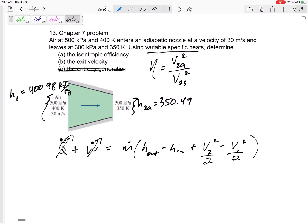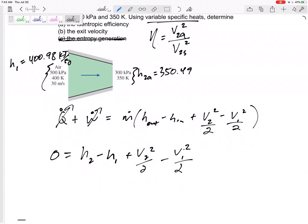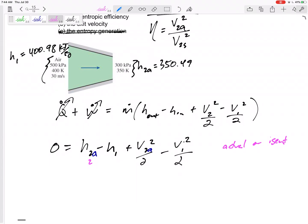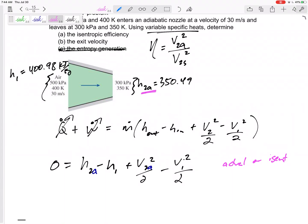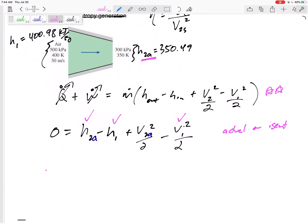So zero equals h2 minus h1 plus v2 squared over 2 minus v1 squared over 2. I can do this for actual or isentropic - h2 actual and v2 actual, or h2s and v2s. It's really two separate equations. Since I have h2 actual, h1, and v1, I'm going to use that to get v2 actual. I forget sometimes you can use conservation of energy for these problems twice - for actual or isentropic. Here I'm using it for actual.